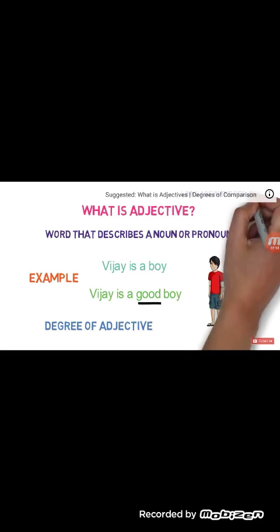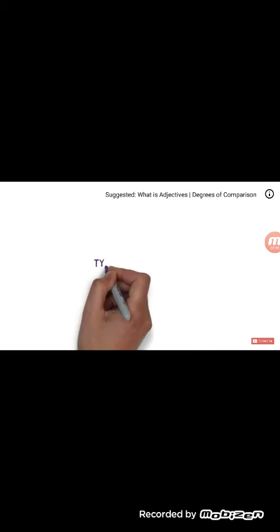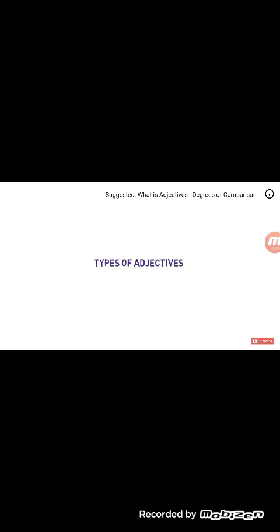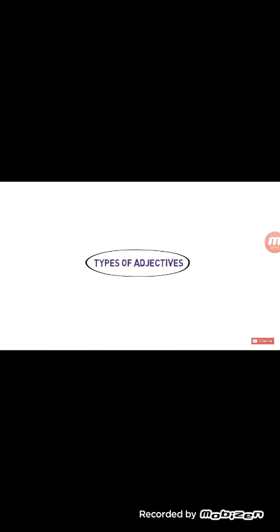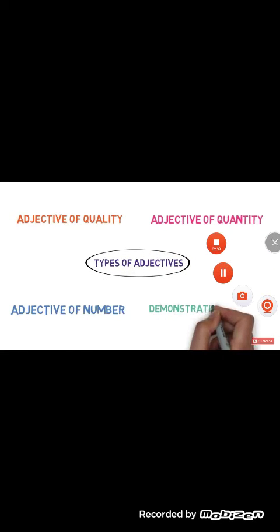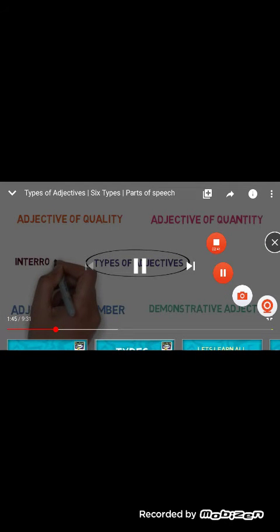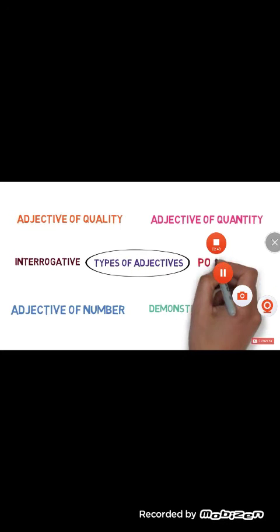Now let's look into different types of adjectives. Adjectives are divided into various types — we can find six types: adjectives of quality, adjectives of quantity, adjective of number, demonstrative adjective, interrogative adjective, and possessive adjective. Now we will see what is the adjective of quality.